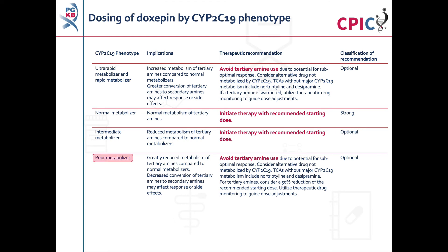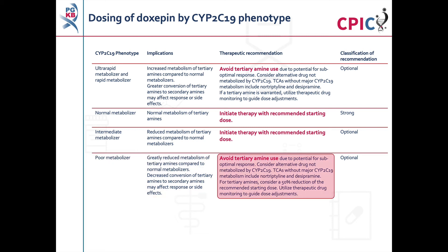Patients with a CYP2C19 poor metabolizer phenotype will have greatly reduced metabolism of tertiary amines. Use of tertiary amines should be avoided in these patients. If use of a tertiary amine is warranted, a 50% reduction in the recommended starting dose should be considered. This is an optional recommendation.